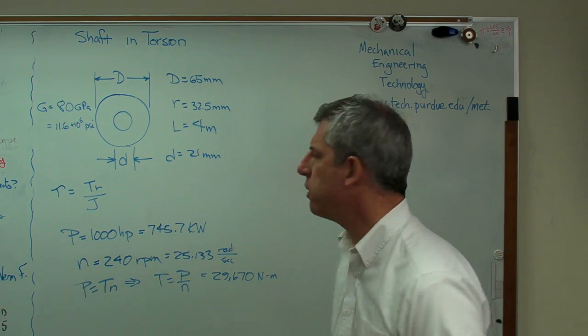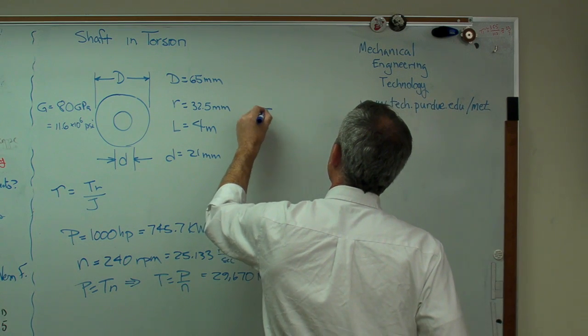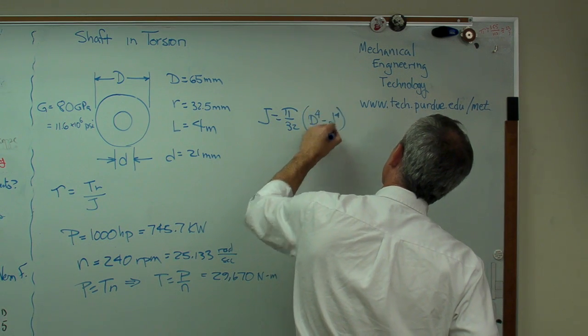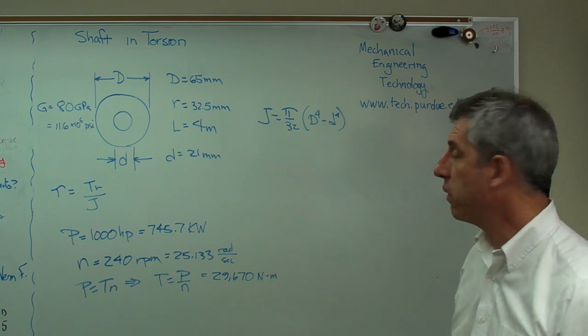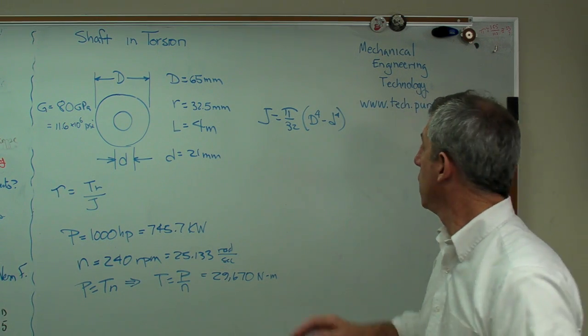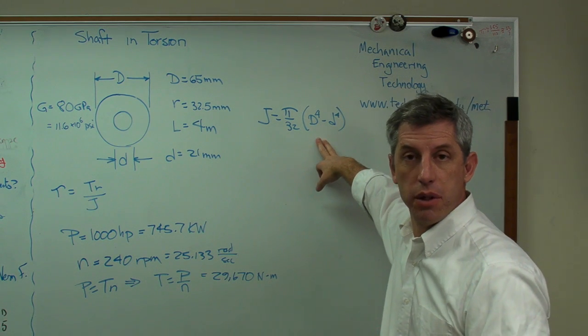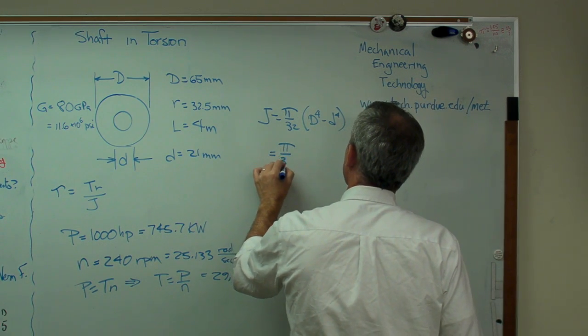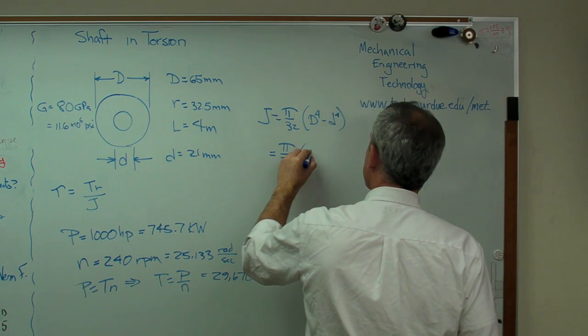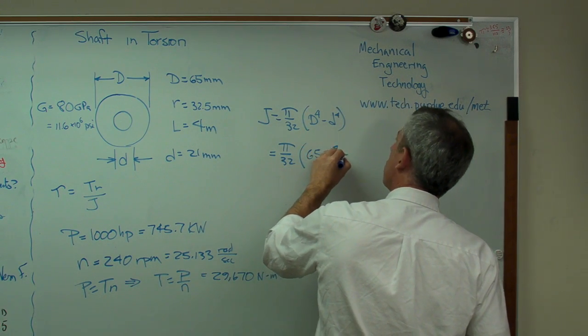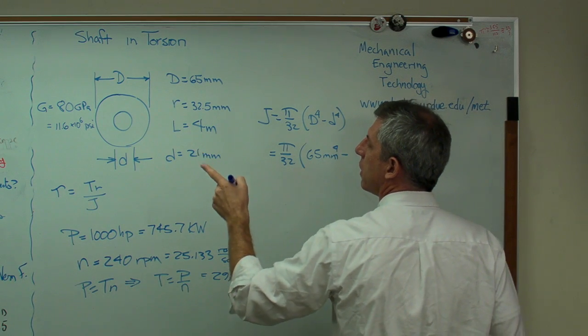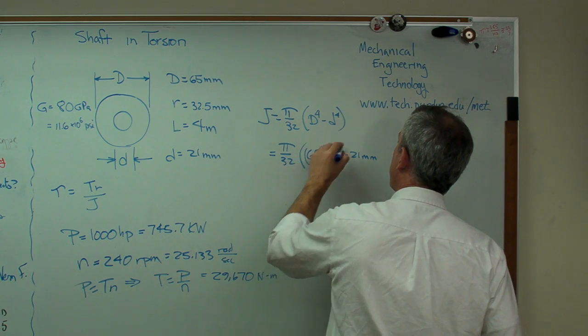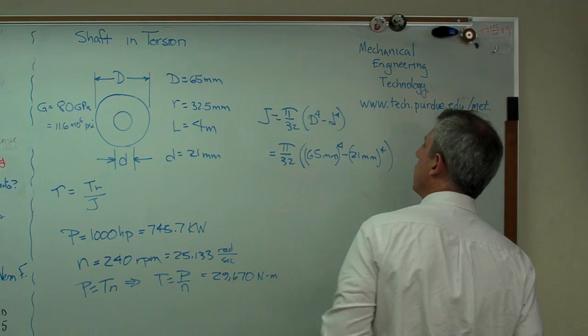Do I have J? Let's figure out J. J is pi over 32 times big D to the fourth minus little d to the fourth. Remember, that's going to be meters to the fourth or millimeters to the fourth, however we choose to do this. Because we're talking about moments of inertia here. Moments of inertia always have the units length to the fourth. So it's pi over 32 times, let's do this in millimeters, I guess. 65 millimeters to the fourth minus 21. Now, that's not millimeters to the fourth. That's that quantity to the fourth, just to make that clear.